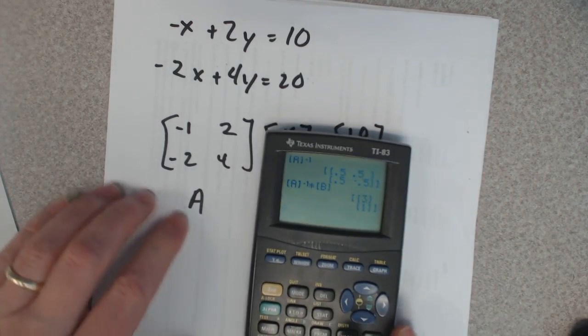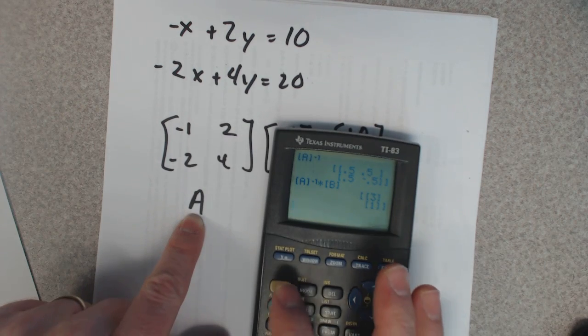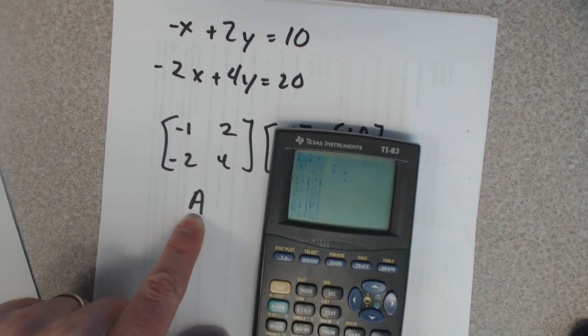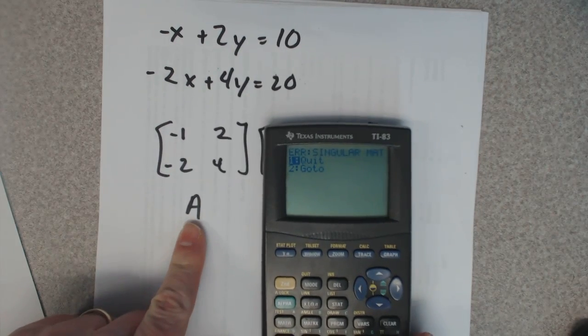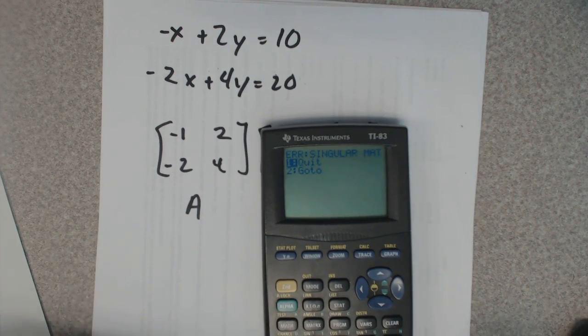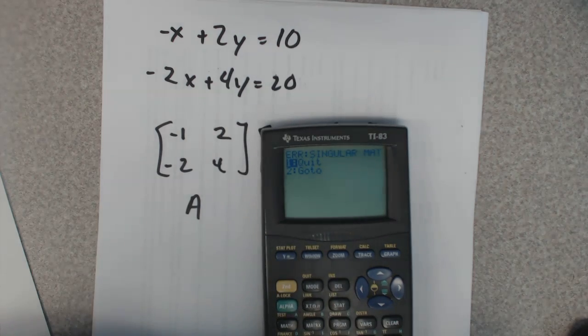And then I'm just going to figure out if that has an inverse or not. I'm just going to go matrix A inverse. A is not invertible. It's a singular matrix. There is no inverse to this matrix.